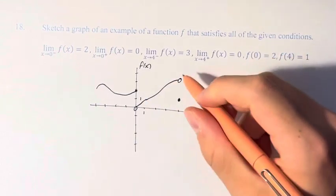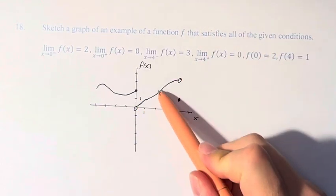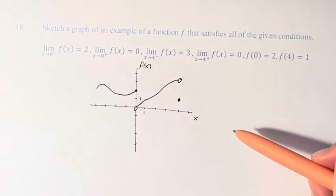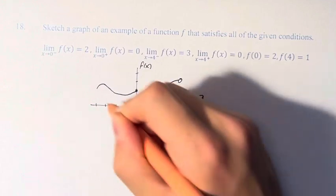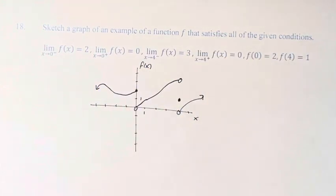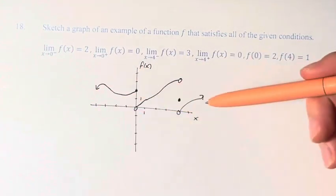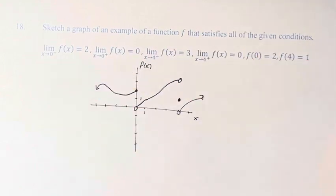But as we approach that point, the function approaches a value of 3. And then from the right, coming from this side, it approaches a value of 0 in a similar way. So this is an example of just one of the possible graphs that satisfies these conditions.